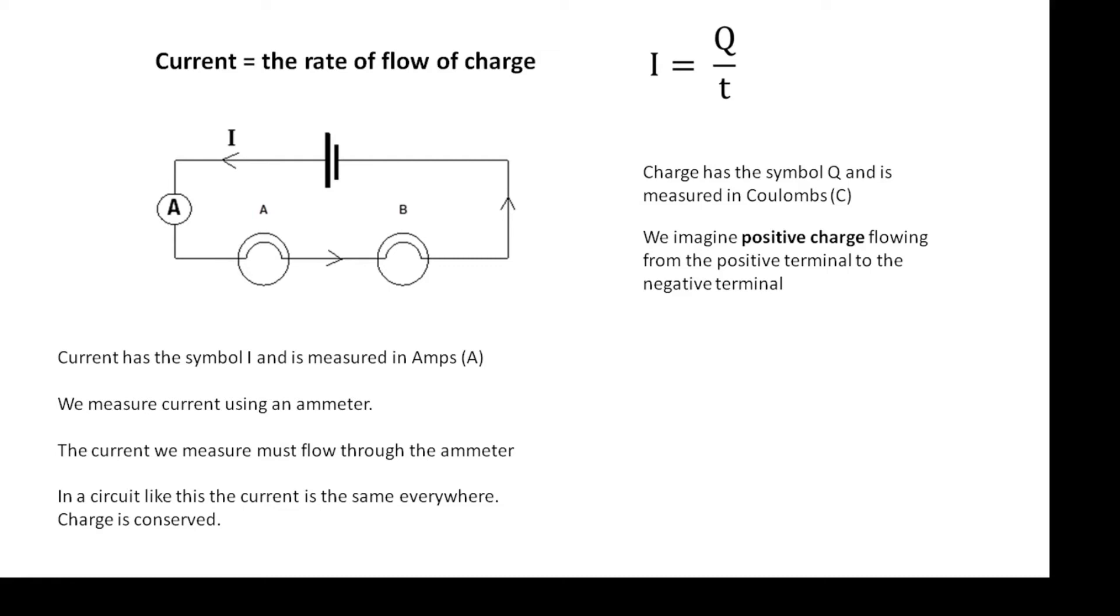If you want to measure the current in a circuit, then you put an ammeter in series in the circuit so that the current flows through the ammeter. The current we measure must flow through the ammeter.